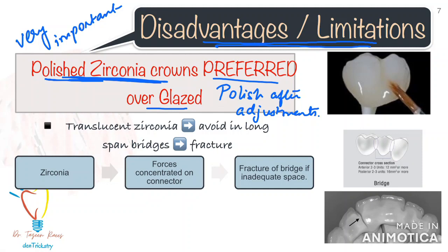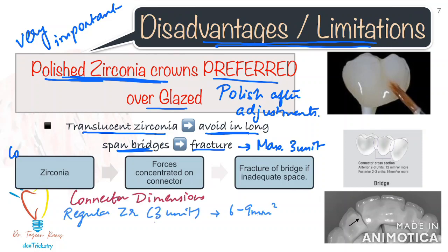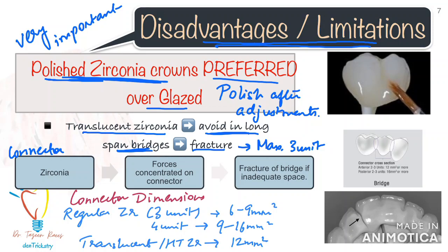The second disadvantage — or rather a limitation — is that translucent or high-translucent zirconia must be avoided in long-span bridges as there are chances of fracture. A very important factor to consider when giving a zirconia bridge is the connector height. The connector is a critical factor and should not be less than 7 to 9 mm² for a regular 3-unit zirconia bridge. For a 4-unit bridge, it must be between 9 to 16 mm². For translucent or high-translucent material, the connector dimension for a 3-unit bridge should be at least 12 mm². If sufficient connector dimensions are not achievable, your zirconia bridge will definitely fracture — so this is something to watch out for before you even start the preparation.